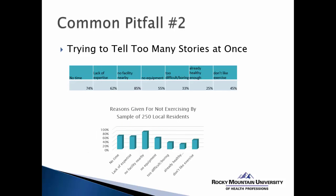Pitfall number two is people try to tell too many stories at once. They put up tables or bar graphs with a lot of information that can be really difficult for the audience to interpret. The audience spends all their mental energy trying to understand the graph or table, and the point you're trying to make can easily be missed. For example, if we collected data on why residents don't exercise and presented both a table and a bar graph, it can be really difficult for audiences to understand what the point is, and we can get lost in that data.